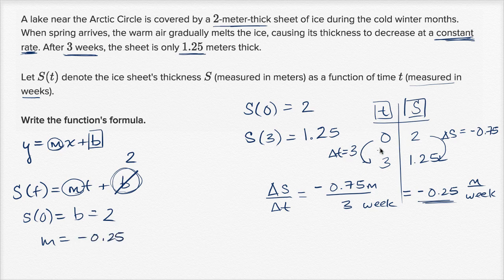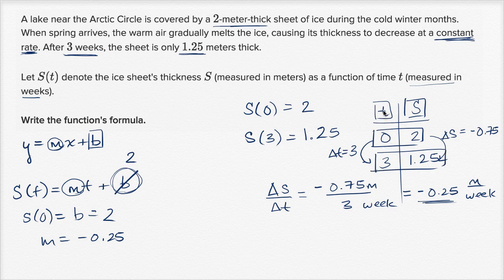You could say that m is the slope between this point, between the point (0, 2) and the point (3, 1.25), if we were plotting these points on a t-S coordinate plane.